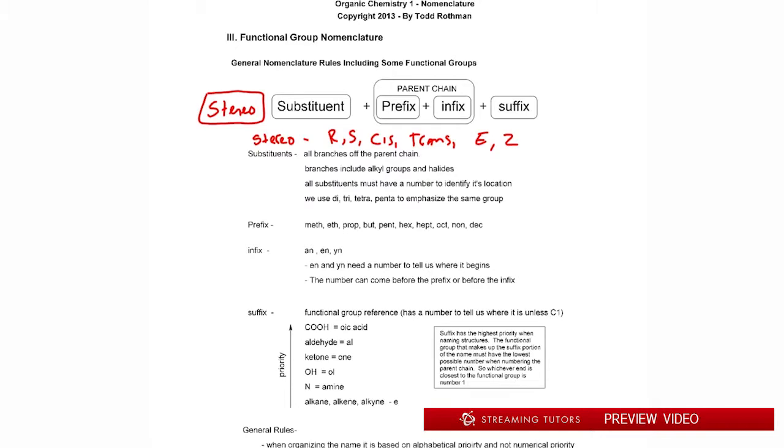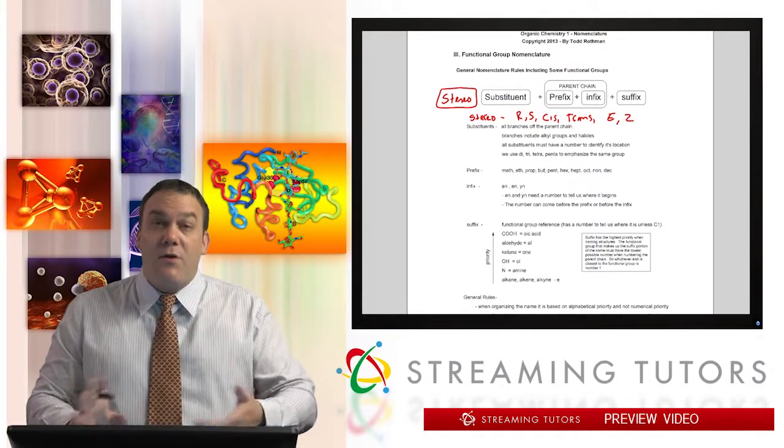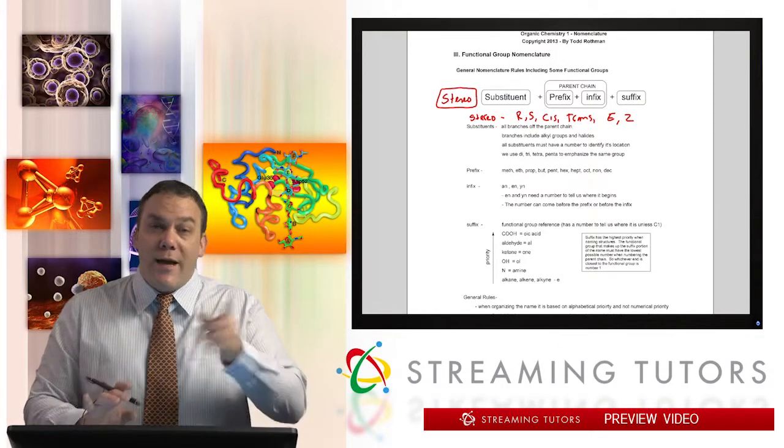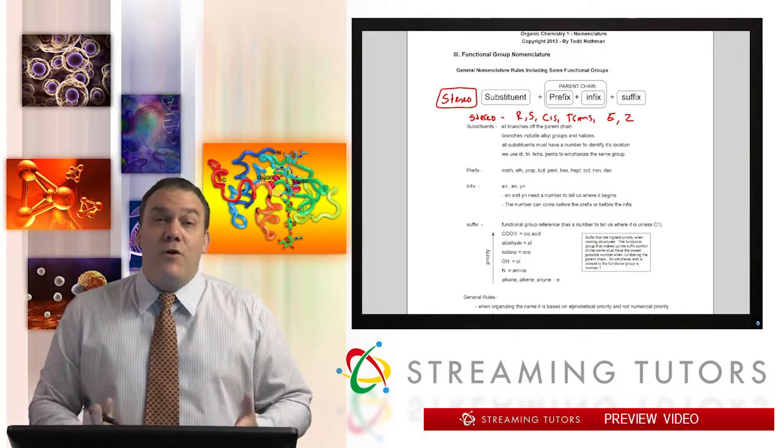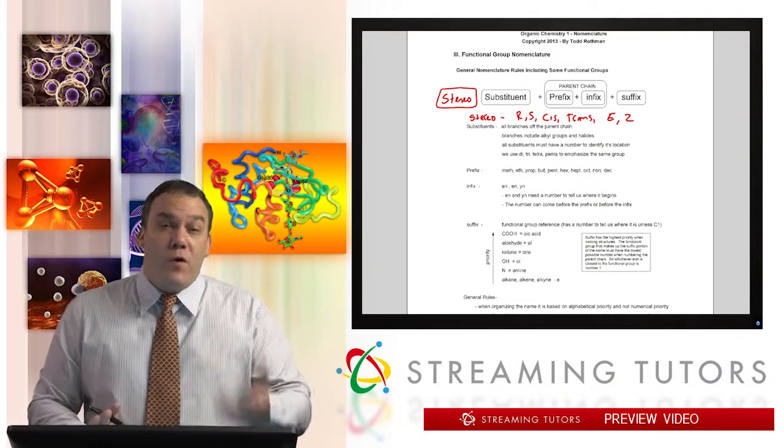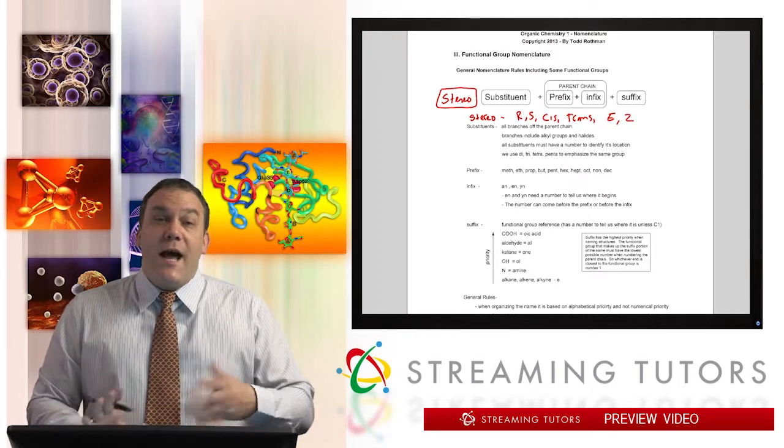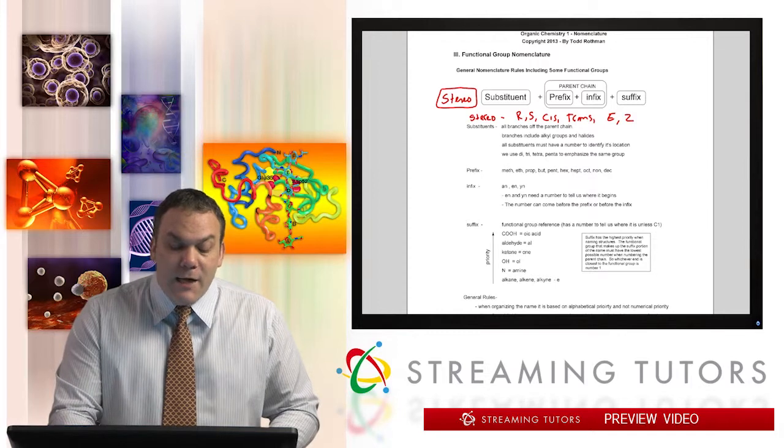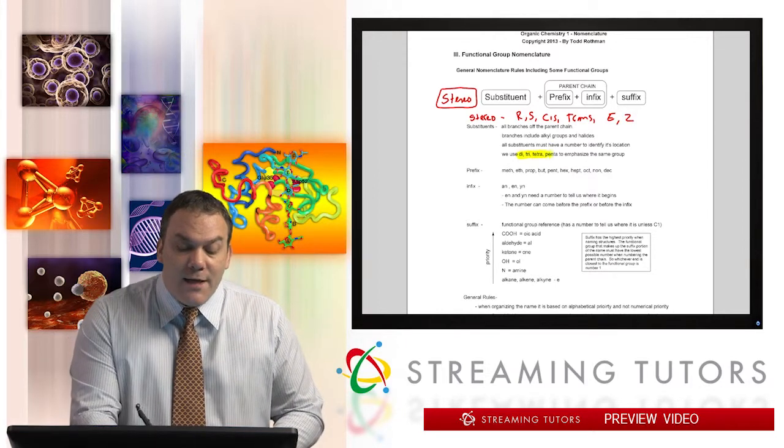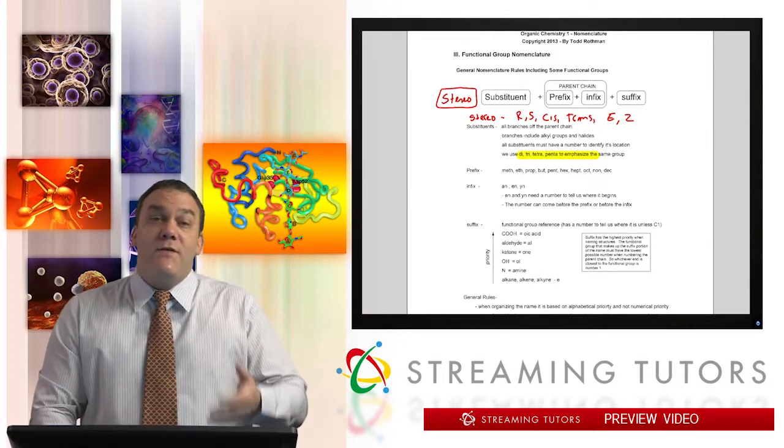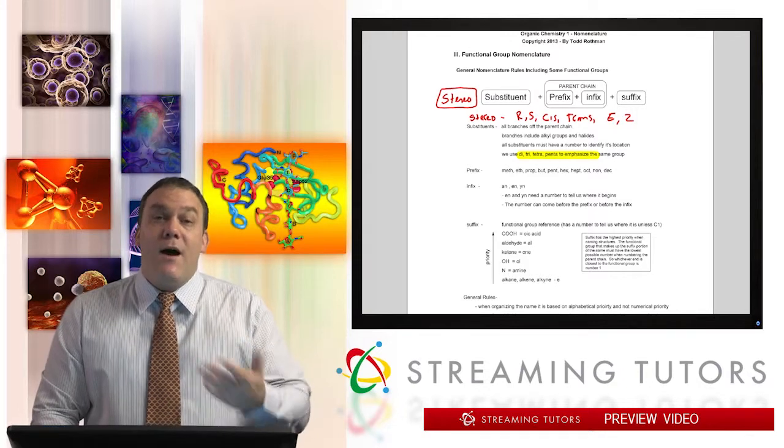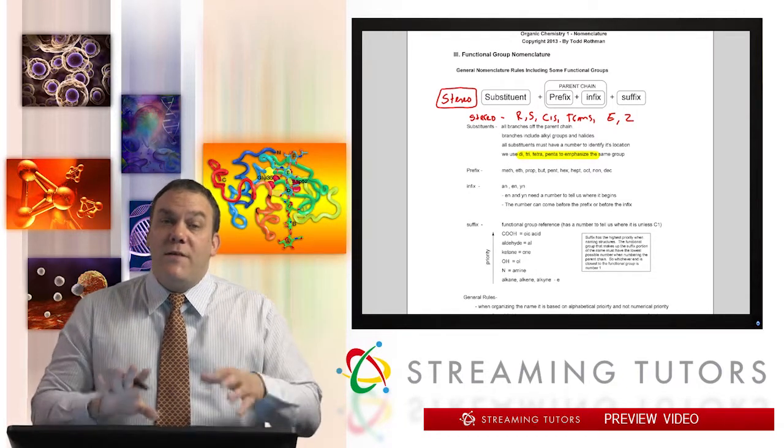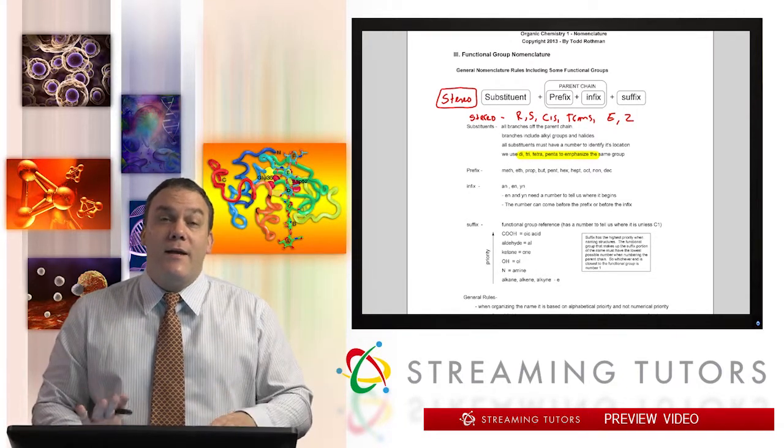Recall that the substituent is simply a branch off of the main parent chain. Your methyl, ethyl, propyl, butyl - we had a 'yl' if it's an alkyl group. And then bromo, fluoro, chloro, and so on if it's a halogen, you add the 'oro.' These are the different substituent types, and we use di, tri, tetra, penta in order to emphasize the same thing many times.